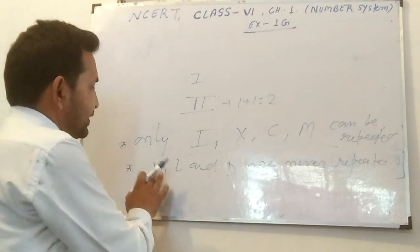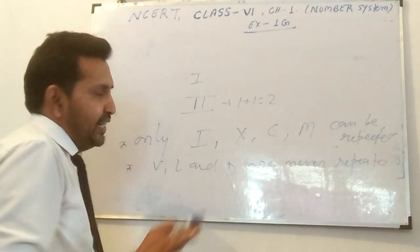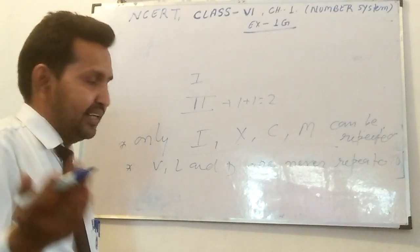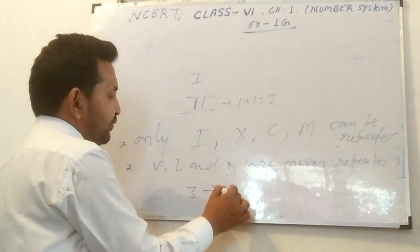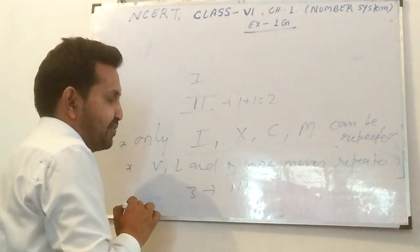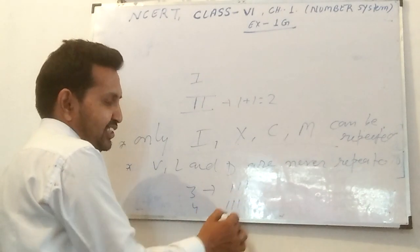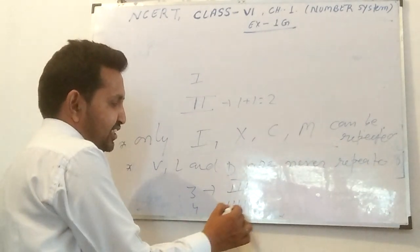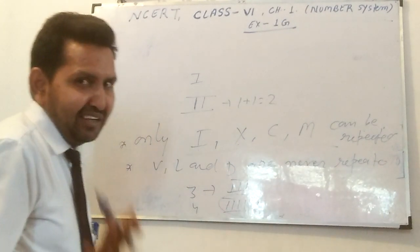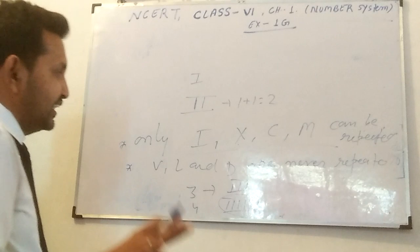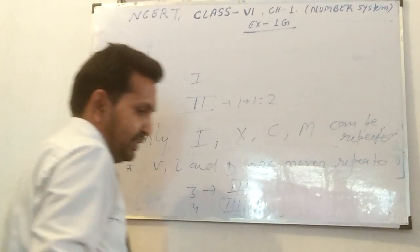If repetition is required, then the maximum we write is three times. For example, III means 3. But if you need to write four, you do not write IIII — four I's is not proper Roman numeral notation. So we take only three times maximum for any type of letter that requires repetition.